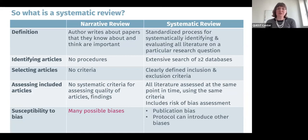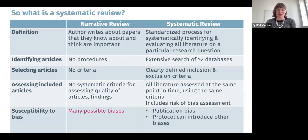When we have a traditional or narrative review, the author is going to write about papers that they know about and they think are important. This is different from a systematic review because with a systematic review, there is a very standardized process that we use to systematically identify and evaluate all literature that has addressed or answered a particular research question. With the narrative review, there's no real procedure for identifying articles — it's simply up to the scientist writing the review to decide what they want to include and why.